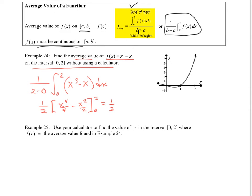So this is going to be 1 half. Plug in the 2, and I'm going to get 16 over 4, which is 4. And then I'm going to subtract off. Plug in the 2, 4 over 2, which would be 2. And then I'm going to get minus 0 by plugging in the lower limit. And so 1 half of 2 would be 1. That's the average value.